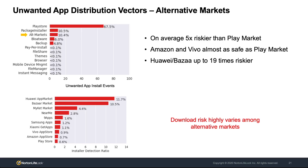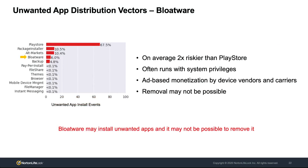Another surprisingly significant distribution vector of unwanted apps is bloatware applications, responsible for 6% of all unwanted app installations in the dataset. This is worrisome due to the fact that these applications often have system privileges, and removal by security tools may not be possible because these apps may be installed on the read-only partition of the operating system. The fact that we see installations coming from bloatware applications shows evidence of ad-based monetization coming from device vendors and carriers.